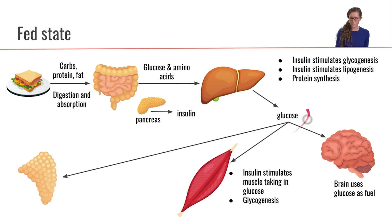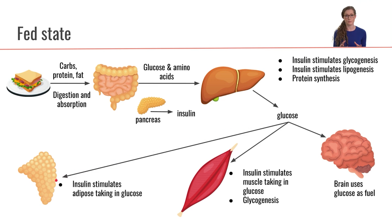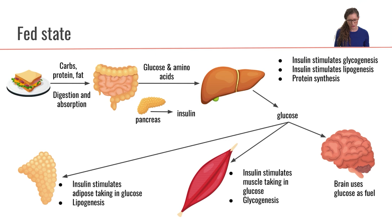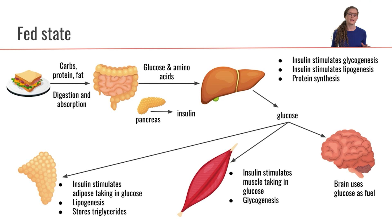That glucose will also be taken up by the adipose tissue. Insulin is stimulating the adipose tissue to take up glucose for storage and utilization. The adipose tissue is going to take that glucose and turn it into fat through lipogenesis, and then store those lipids as triglycerides.